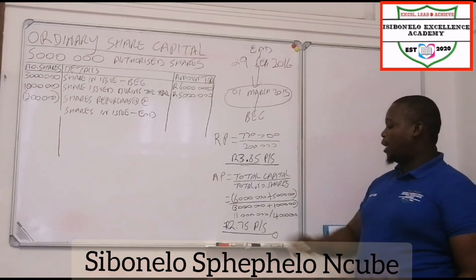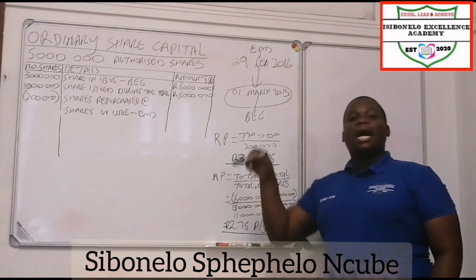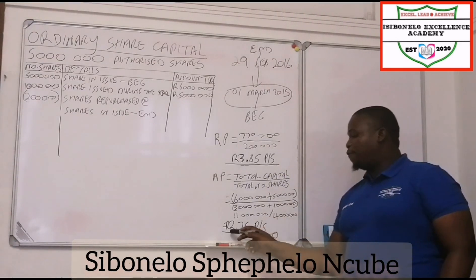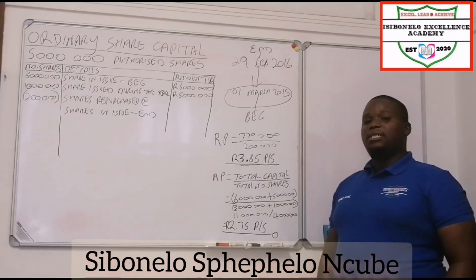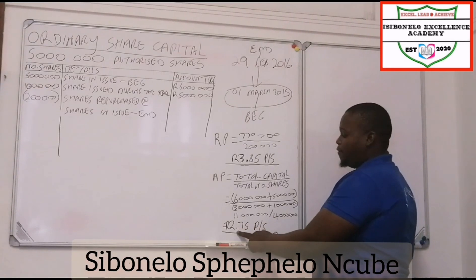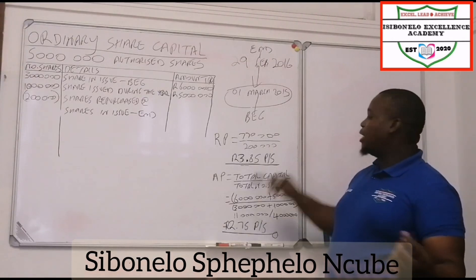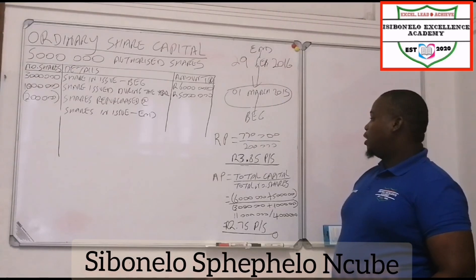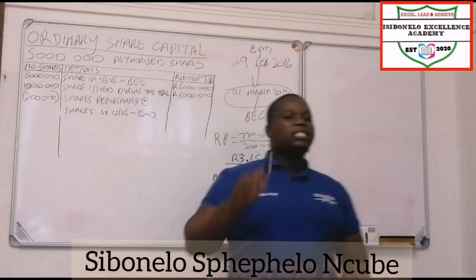That gives us 2.75, so this 2.75 per share is the average price — meaning each share is worth 2.75. But the company paid 3.05, so the share is worth less than what the company paid. Therefore, the company suffered a loss. The principle here is that share repurchase is always limited to the lower of the repurchase price and the average price.